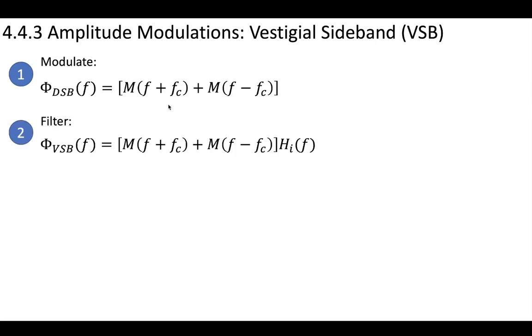Next, we need to apply a filter to get that VSB signal. Now recall, if we have our DSB signal like this, it has a bandwidth of 2B.